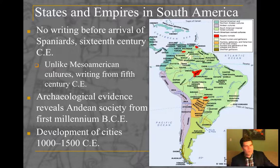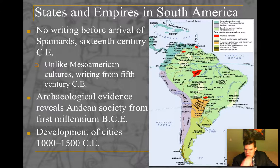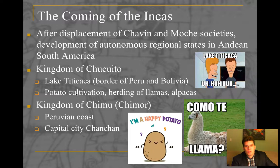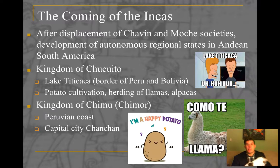In South America, there was no writing until the Spanish arrived, so our knowledge comes primarily from archaeological evidence — artifacts and ruins like Machu Picchu. Archaeological evidence reveals an Andean society in the first millennium BCE that developed cities somewhere between 1000 and 1500 CE. The most famous South American societies were the Inca. After the displacements of the Chavin and Moche societies, an autonomous regional state emerged in Andean South America, beginning with the kingdom of Tiwanaku, which emerged at Lake Titicaca.